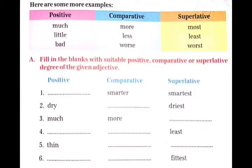यहां पर positive, comparative, superlative degree के कुछ examples दिये गया हैं. जैसे: much, more, most; little, less, least; bad, worse, worst.